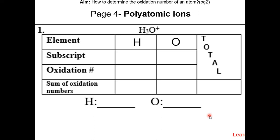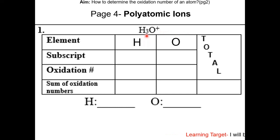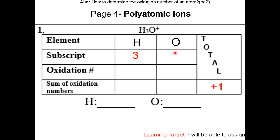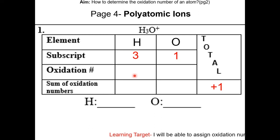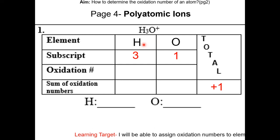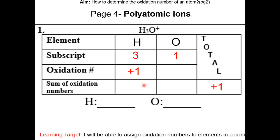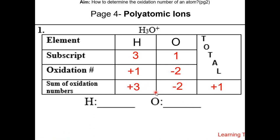In the next part of the lesson, we're going to practice polyatomic ions. From rule five, the sum of the oxidation numbers in a polyatomic ion is the charge of the polyatomic ion. For hydronium, the total will be +1. Hydrogen has a subscript of three and oxygen has a subscript of one. Since hydrogen is less electronegative than oxygen, hydrogen is positive and oxygen is negative. Hydrogen has an oxidation number of +1 and oxygen has −2. The sum of oxidation numbers equals +1.